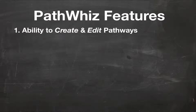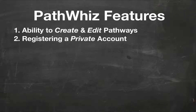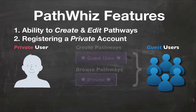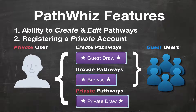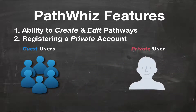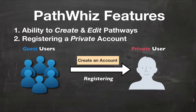To address this, PathWiz also has another option of registering a private account. Users registered in the system, like guests, have the ability to create their own pathways and have equal editing privileges on public pathways, but with the added benefit of making their own pathways public or private. If users want to create private pathways for their own personal use, they can do so by first registering an account. The choice of registering an account is completely up to your personal preferences.